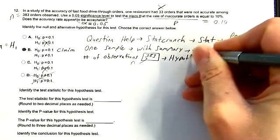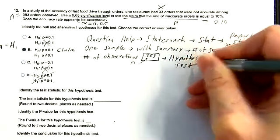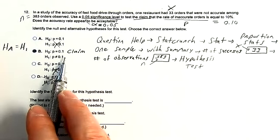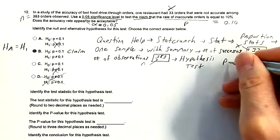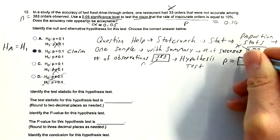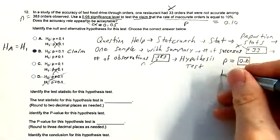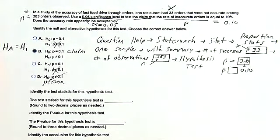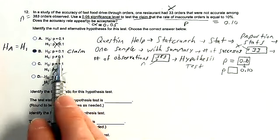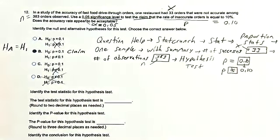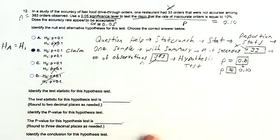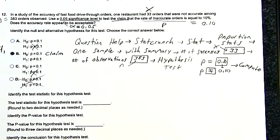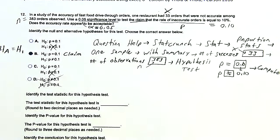Below this, set up your hypothesis test. Type 0.10 in the null proportion box, then select the not-equal-to symbol since there's no indication of greater than or less than. Then hit compute. These are the same steps for all problems today — once you have them down, you can get all the answers you need for this section.